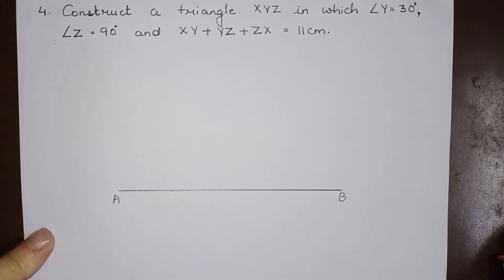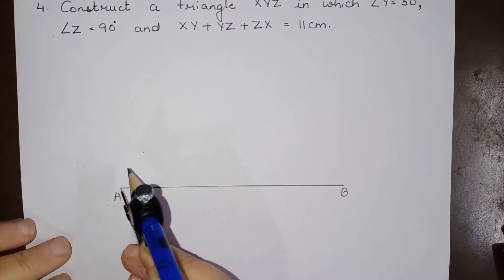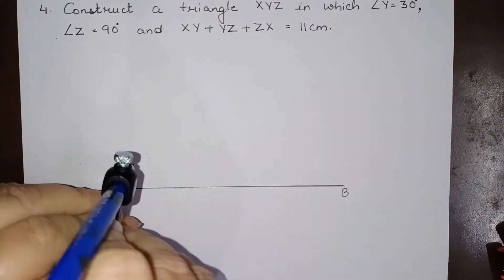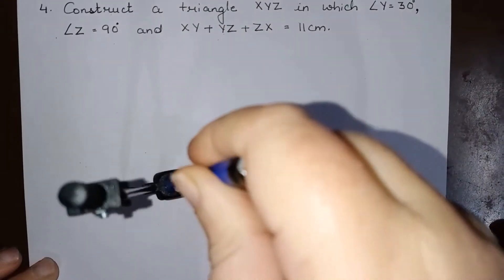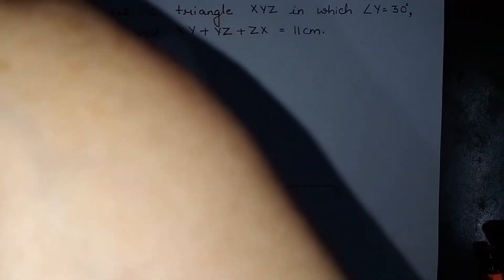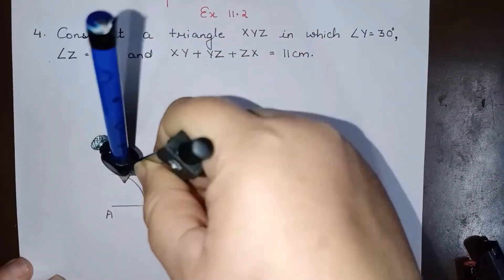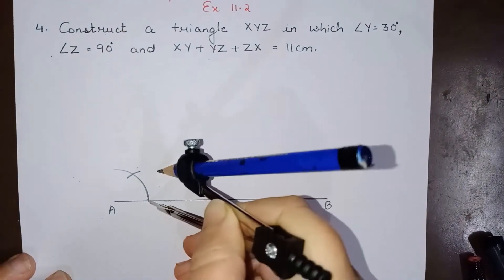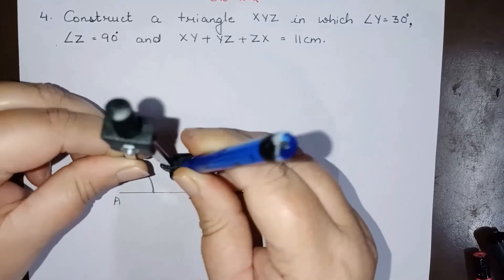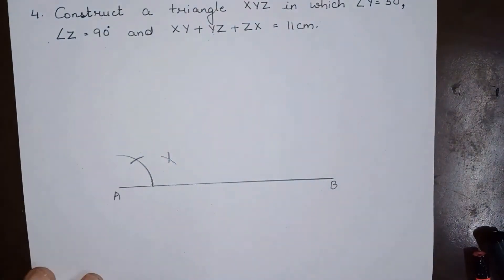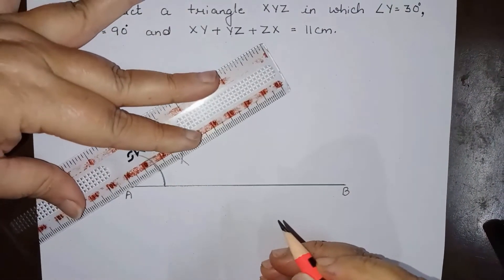Now after this, at point A, construct an angle of 30 degrees, since angle Y is given to be 30 degrees. To construct an angle of 30 degrees, first construct 60 degrees, then bisect that angle to get 30 degrees. So this is an angle of 30 degrees at A.